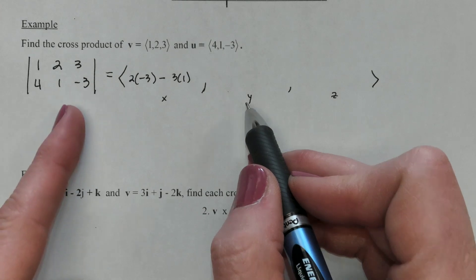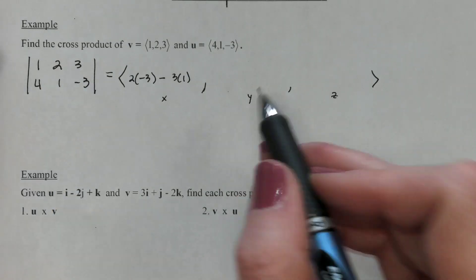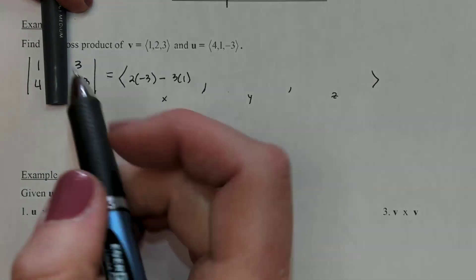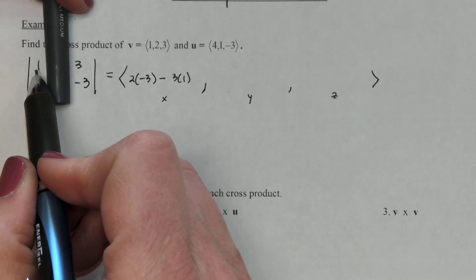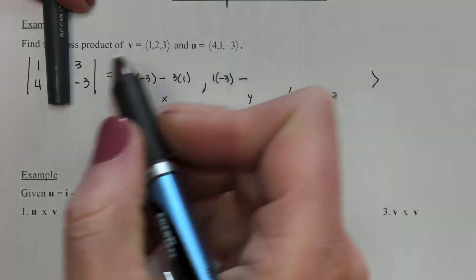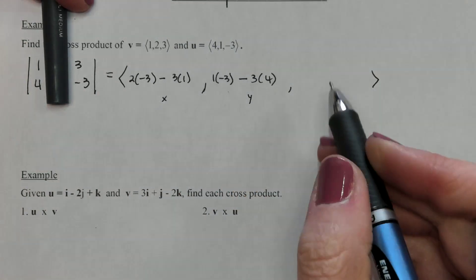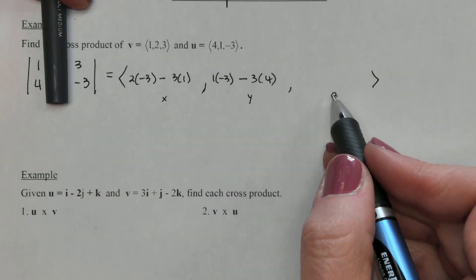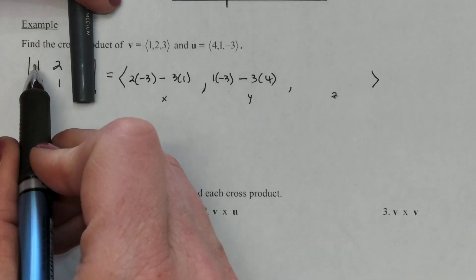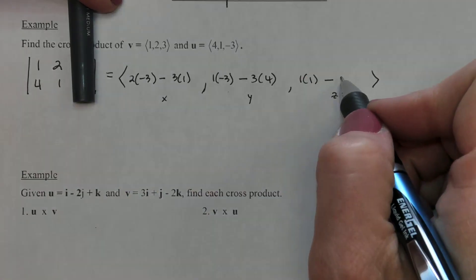To find the second piece, the Y coordinate, we're going to cover up the middle column of numbers. You always start in the upper left, so one times negative three, and it's always subtraction, minus three times four. To find our last component, the Z value, we're going to cover up the last column and again start in the upper left: one times one minus two times four.